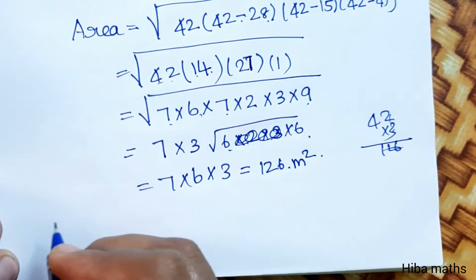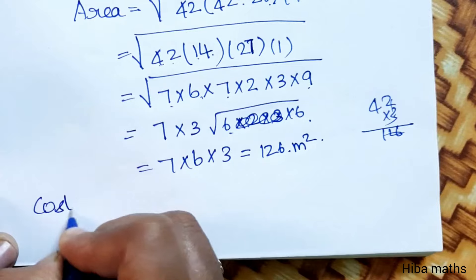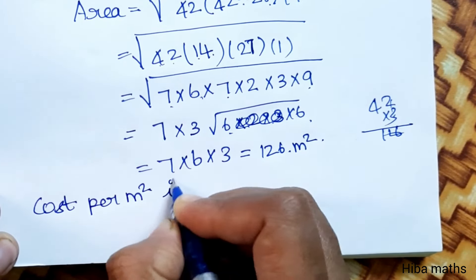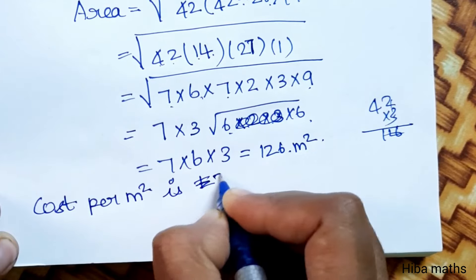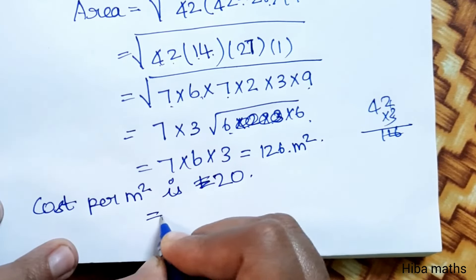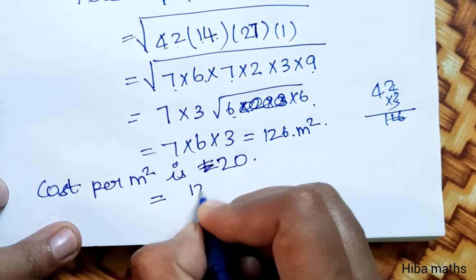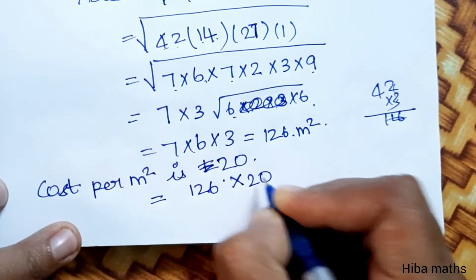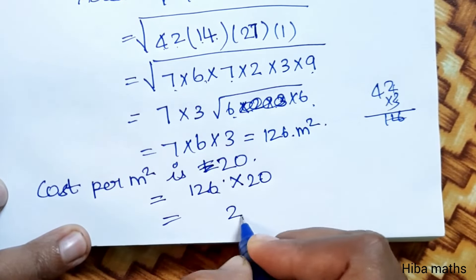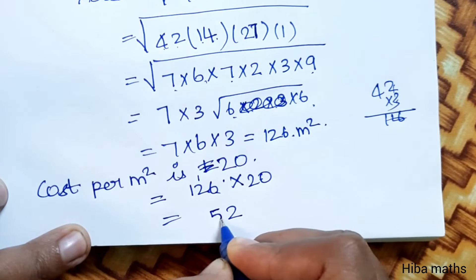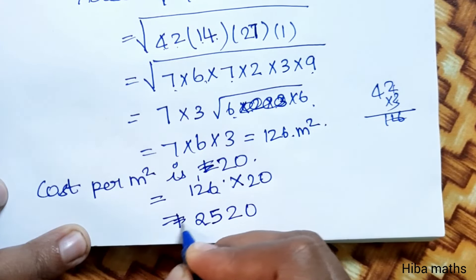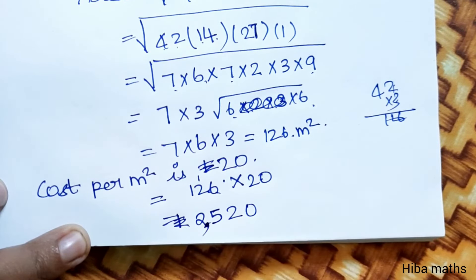Now we calculate the cost. Cost per meter square is rupees 20. Total cost equals area into cost per meter square equals 126 into 20, which equals rupees 2520. So the cost of leveling the triangular field is rupees 2520.